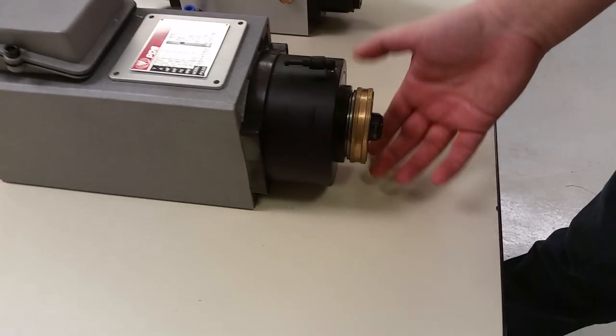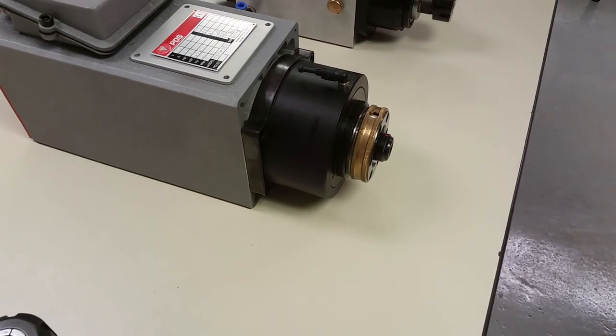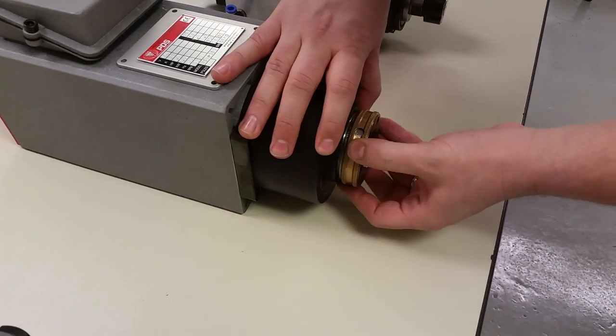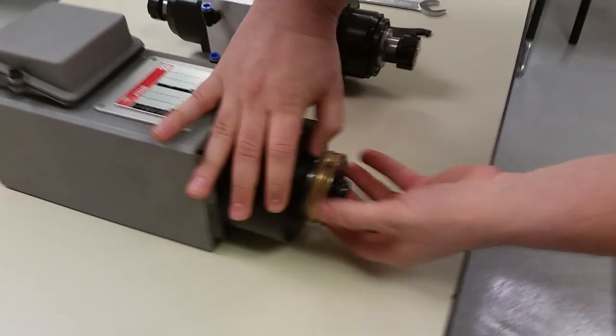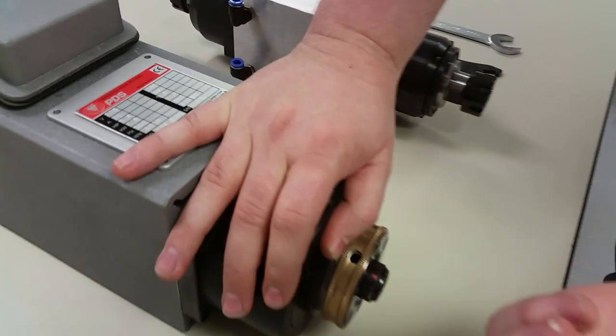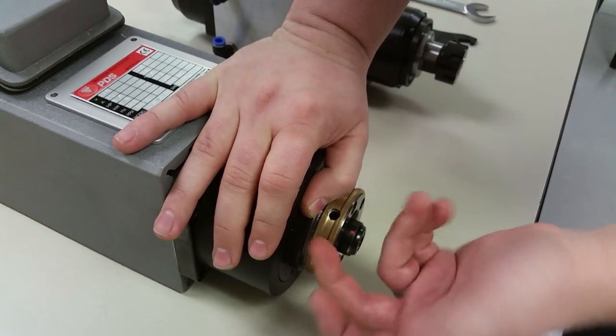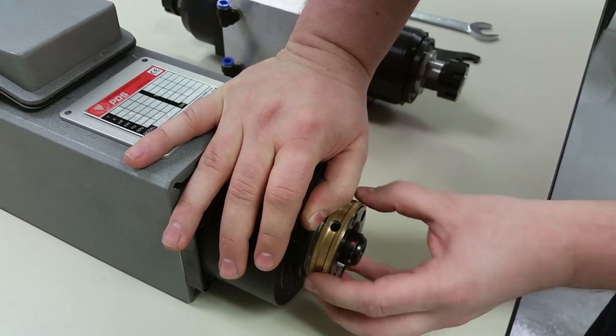The HSKC spindle is a quick change spindle. Basically you would have to take this cover ring and switch it over to where you see through the hole. The purpose of this cover ring is to keep debris from falling down in this hole while it's cutting.